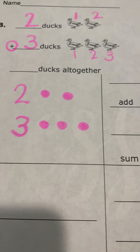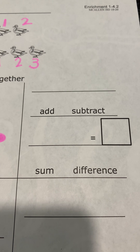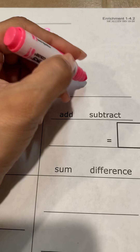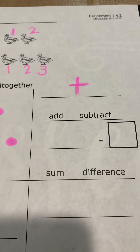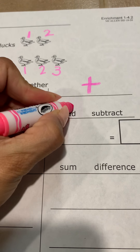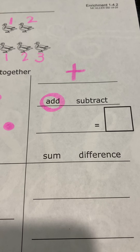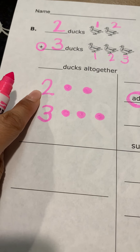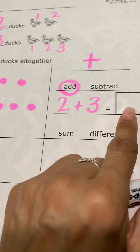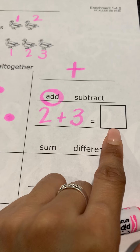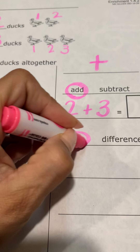Once we do that, we formulate our plan or strategy. What is the operation? We are going to use the plus sign because we are adding. When we use the plus sign, we add. Now we make our number sentence: our first addend and our second addend — two plus three. We don't write anything in the solution box. And when we are adding, we are looking for the sum.